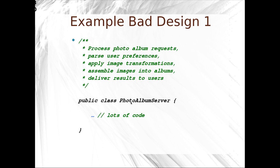Here's an example of a bad design. We've got a photo album server. The photo album server has the following responsibilities: it processes requests, it parses user preferences, it applies image transformations, assembles images into albums, and it delivers these results to users. It's a big class with a lot of responsibilities. A lot of responsibilities should already peak your ears and you should think: those responsibilities should be separate classes and be the responsibility of separate objects and encapsulate state.